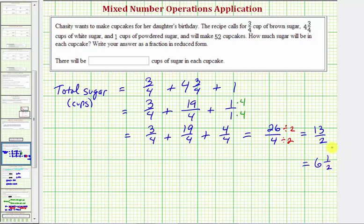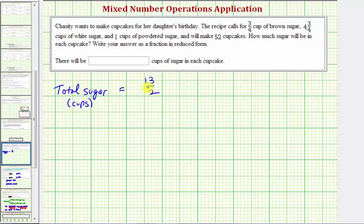There are six and a half cups of sugar in the total recipe, but we'll go ahead and leave the total sugar as an improper fraction of thirteen-halves. So there's this much sugar in the total recipe, which makes fifty-two cupcakes.